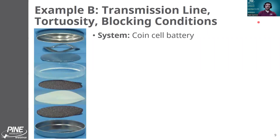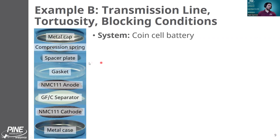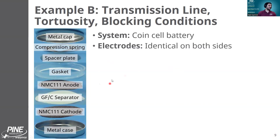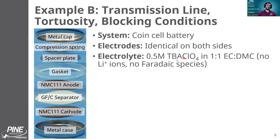A coin cell — with the same disclaimer that I don't have all of the information about the physical system — usually consists of a metal case and a cap, usually some kind of a compression spring and a gasket to press all of the items inside together. In this case the person used an identical NMC111 electrode on both sides, so the anode and cathode are essentially identical. This is a nickel manganese cobalt oxide, which is typically used as a lithium ion battery electrode, and they used a glass fiber carbon separator.